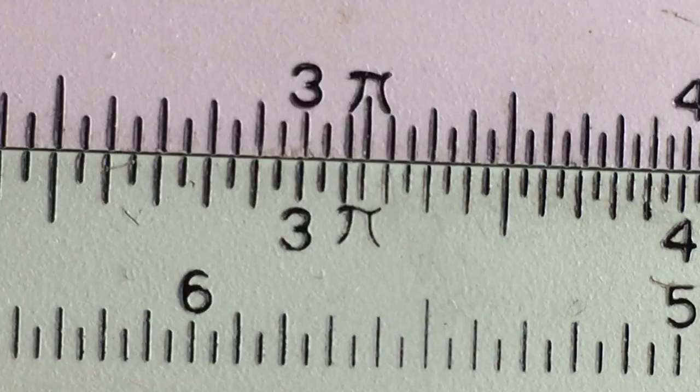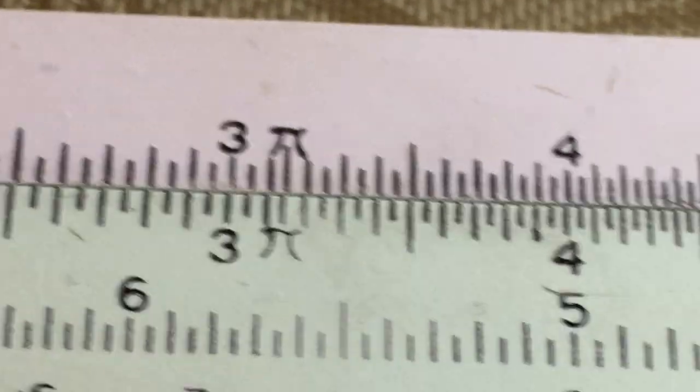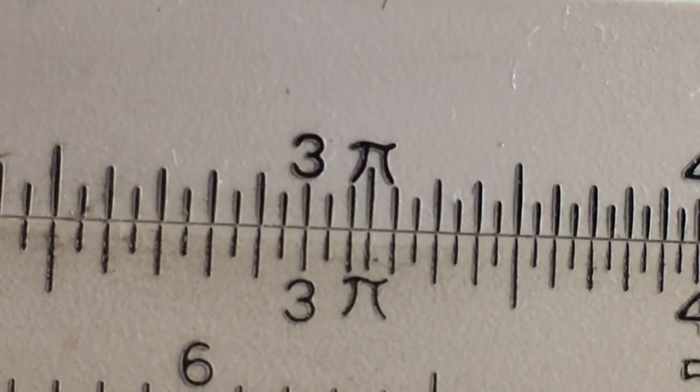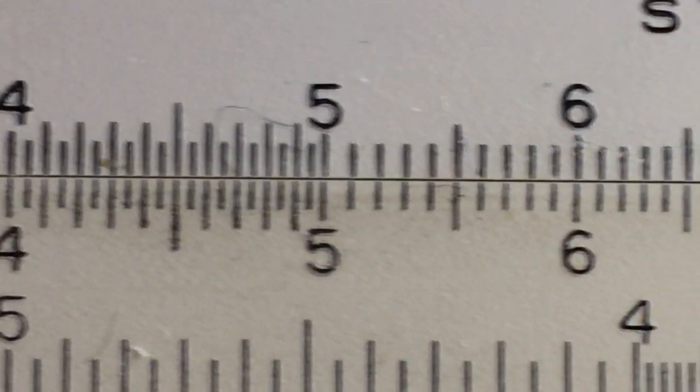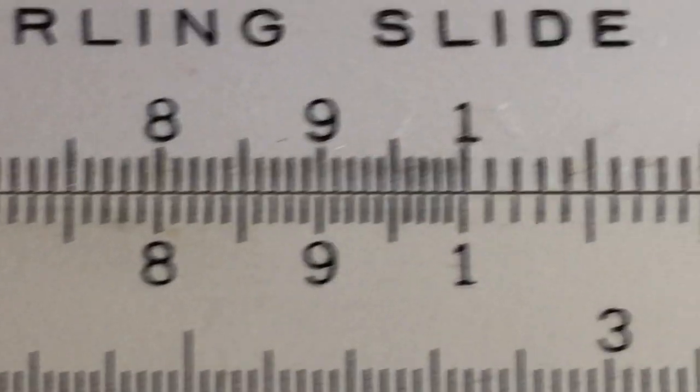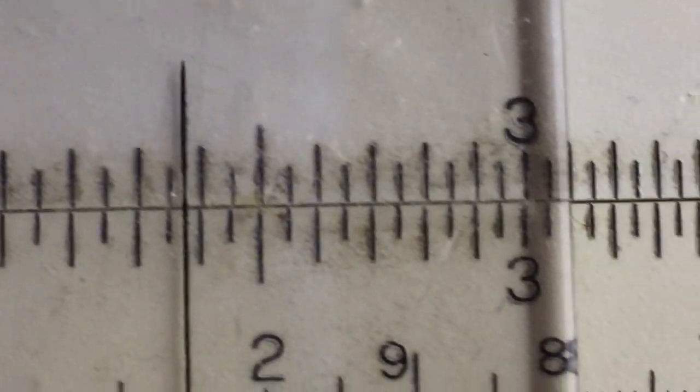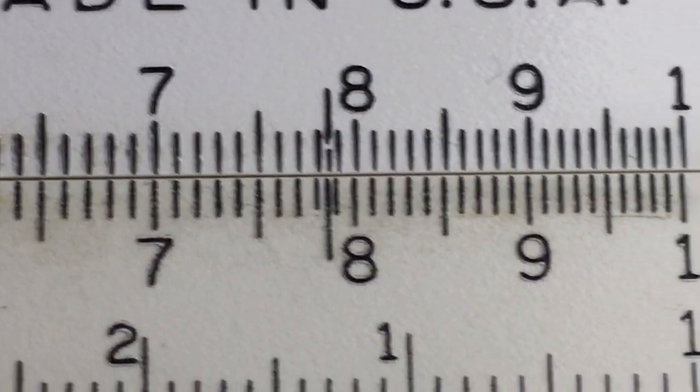you'll notice there should be a pi symbol right there, 3.14, and on this other slide rule we have it right there. Those are the only marks I can see. I don't see anything else really striking but yeah there you have it.